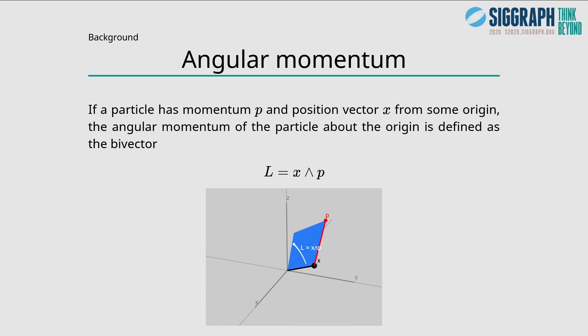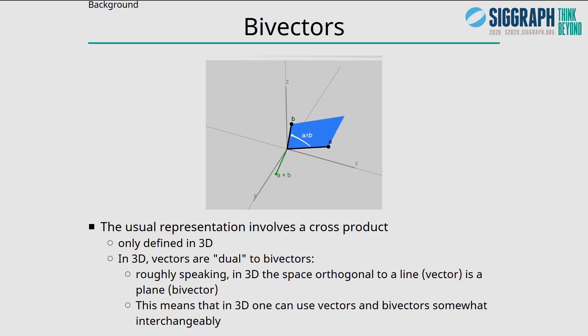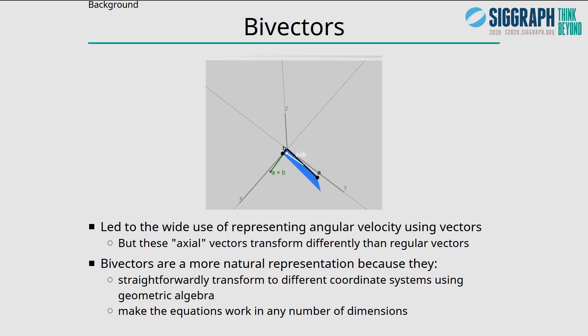Specifically, if you have a particle with momentum p and position vector x, then the angular momentum of the particle will be the exterior product of x and p. The usual representation would involve a cross-product, but that's only defined in 3 dimensions. In 3 dimensions, vectors are dual to bi-vectors, so roughly speaking, in 3D the space orthogonal to a line is a plane. That means in 3D we can use vectors and bi-vectors somewhat interchangeably. That led to the wide use of representing angular velocity using vectors. But these axial vectors transform differently than regular vectors. Bi-vectors are actually a more natural representation because they straightforwardly transform to different coordinate systems using geometric algebra, and they make the equations work in any number of dimensions.